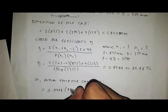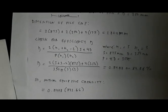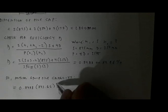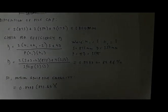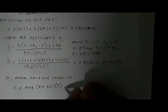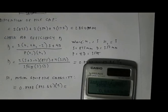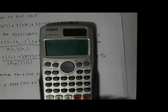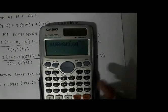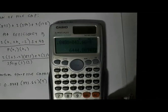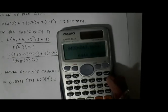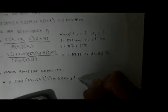The actual group pile capacity is equal to the efficiency multiplied by allowable axial load per pile of 843.66 multiplied by the number of piles which is 9. So we have 0.8488 times 843.66 times 9 equals 6444.89 kilonewton.